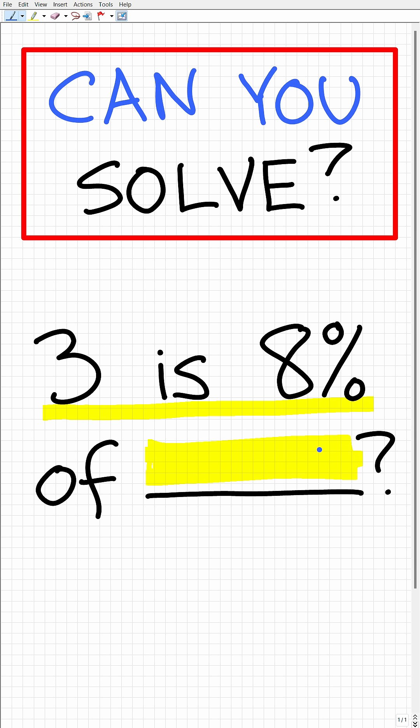Let's go ahead and solve this. So how do we find the percent of a number? If I want to find eight percent of, let's suppose, 20, well, the way you find the percent of a number is to change that percent into a decimal.